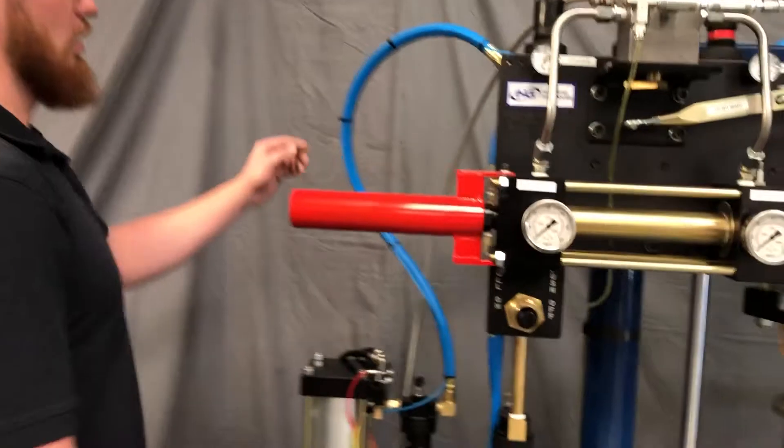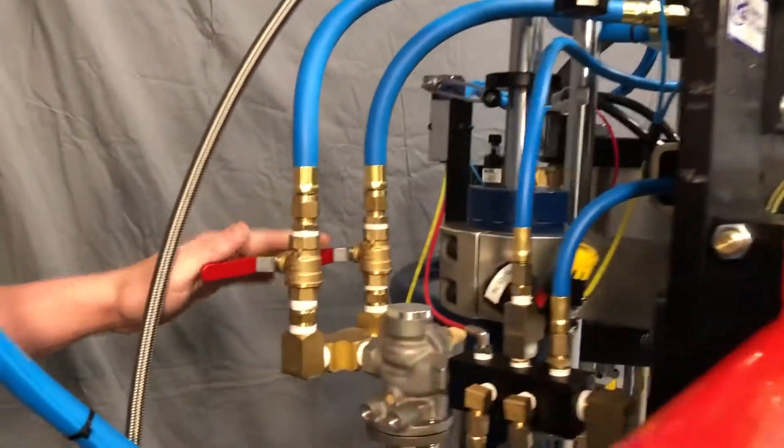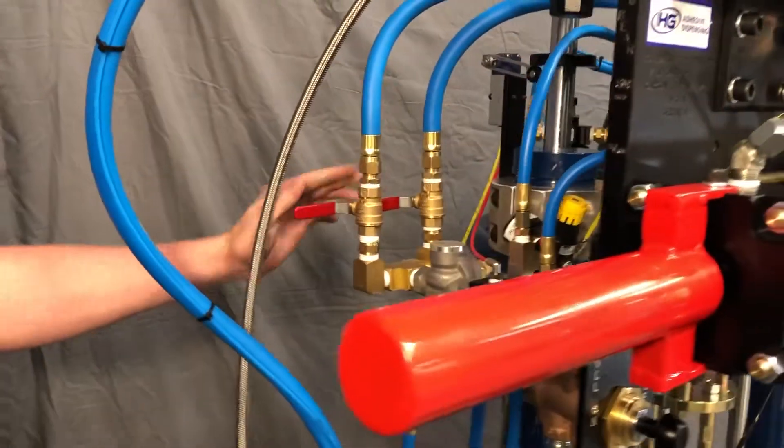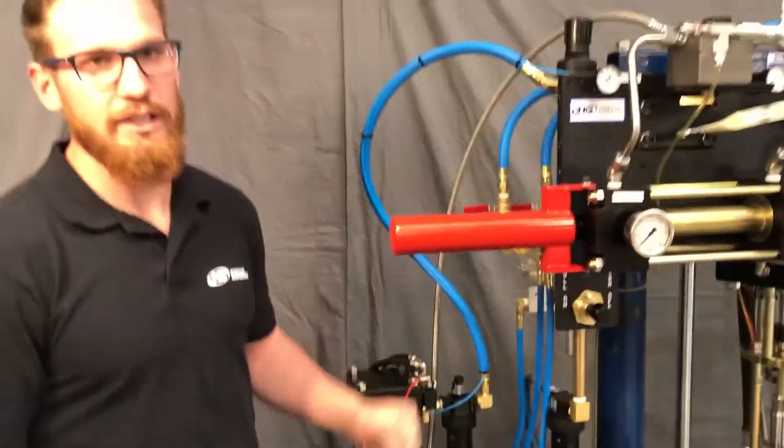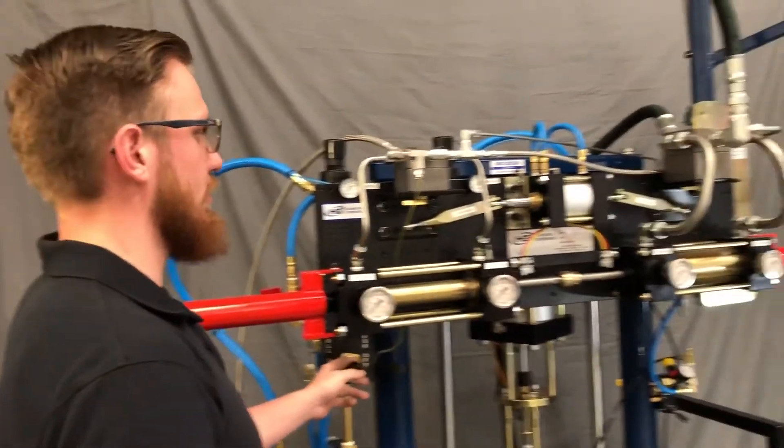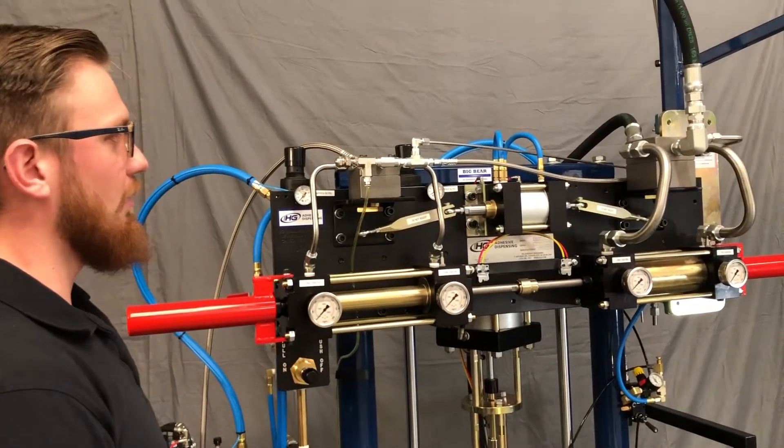All right, first things first, I'm going to come to the back and make sure both of the ball valves are closed. This way you can power up the machine without worrying about your air motor cycling and building up pressure in your ratio sleeves. I'm going to fire it up.